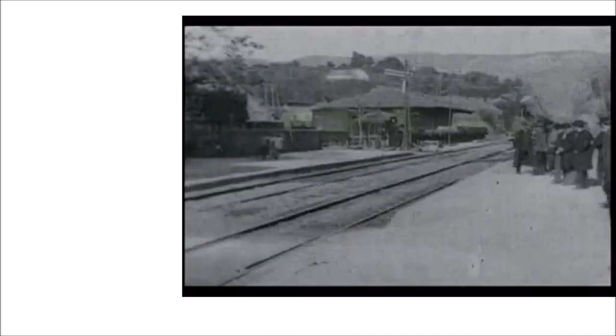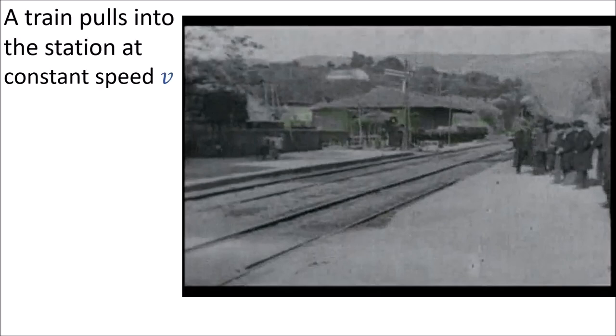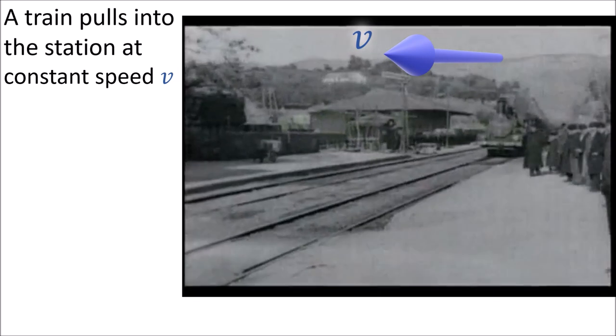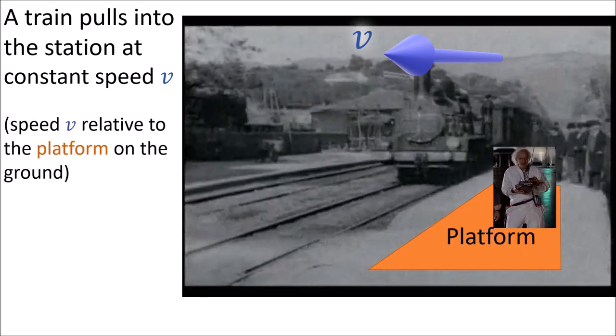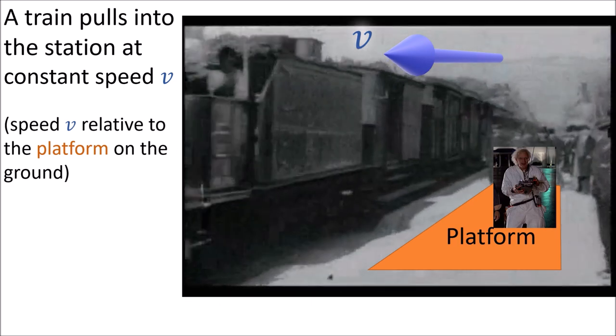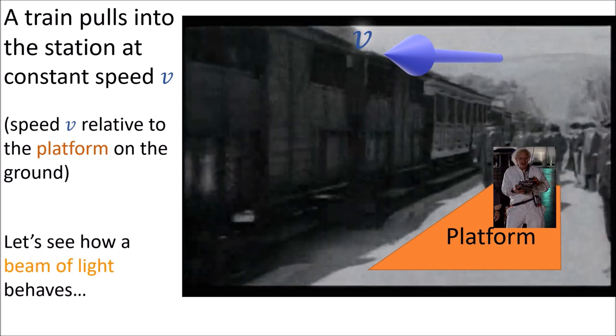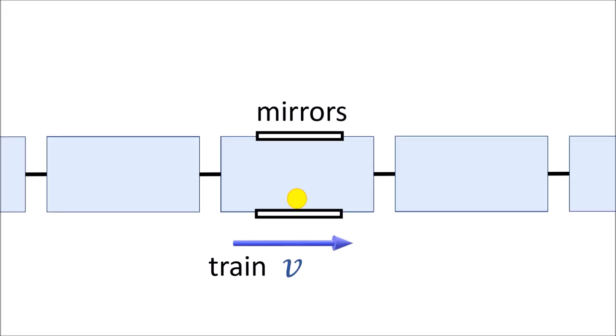To understand why time and space become relative, let's consider the example of a train passing by a station at a constant speed v. The speed v is measured relative to the platform on the ground where a scientist is standing. Now let's see how a beam of light behaves on the train. We'll shine a beam of light across one of the train cars in a direction perpendicular to the train's travel direction. The beam of light will be reflected by a mirror back to where it originally started. We can use the amount of time the light beam takes to travel this distance as a kind of clock, which ticks once every time the beam of light crosses the train car in one direction.